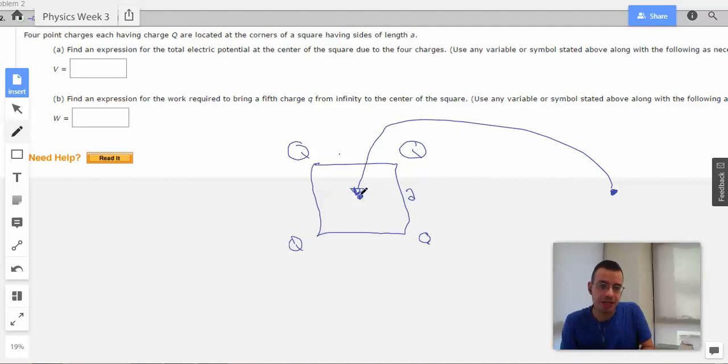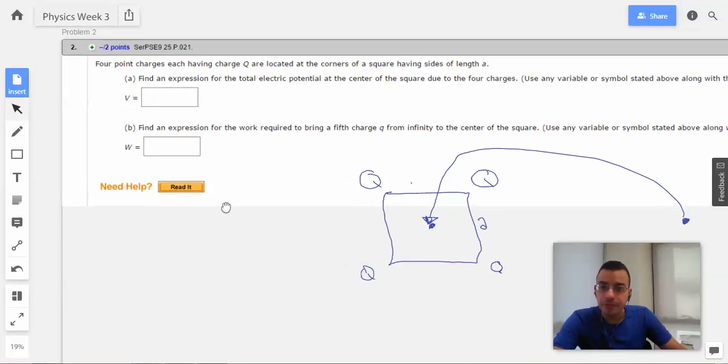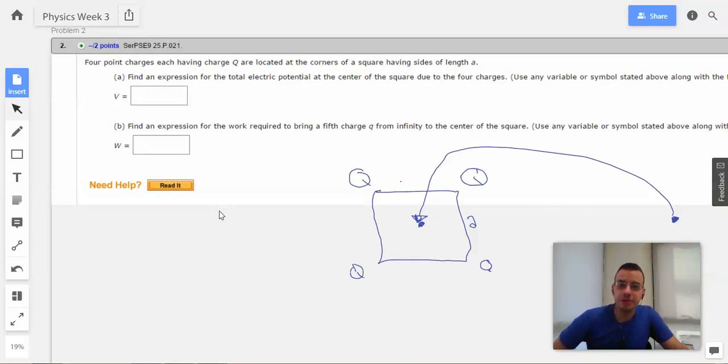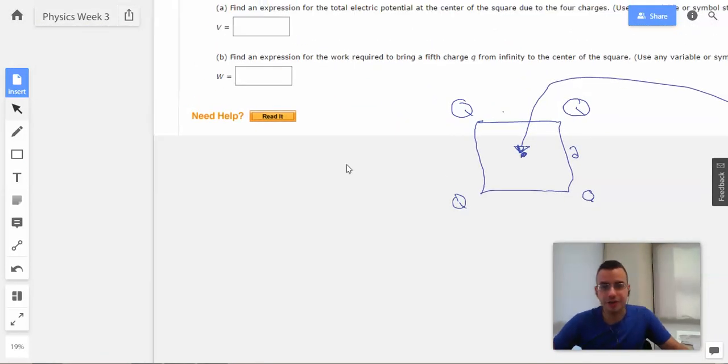So, any path we want, take it, move it right there. Find an expression for the total electric potential. Electric potential, potential, energy, difference. If you don't get that reference, watch the first video. Alright, find an expression. So I'm going to find it for one of them and realize that it's going to be the same for all the rest.